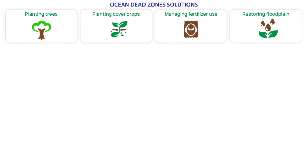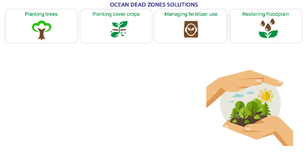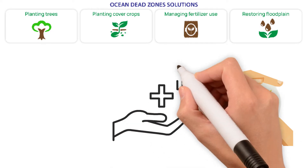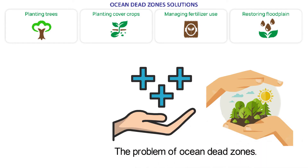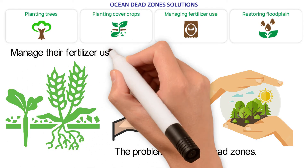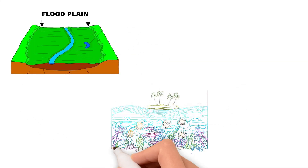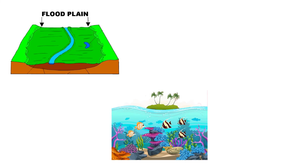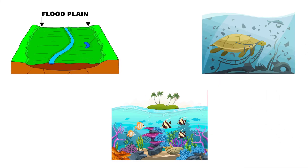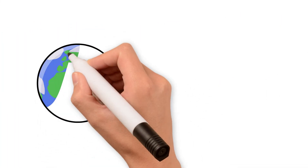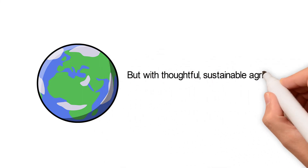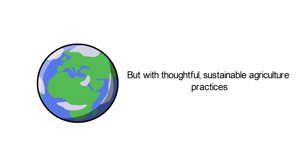Ocean dead zone solutions. Section 404 of the Environmental Protection Agency's Clean Water Act addresses the problem of water pollution in the United States. This law helps us make progress in solving the problem of ocean dead zones. It's also important to work with farmers. Scientists can educate farmers to plant cover crops and manage their fertilizer use better. Another important practice is managing floodplains around the Mississippi River. A floodplain is a flat area around a river that protects against flooding and provides a habitat for marine life. Floodplains can also stop runoff before it gets to the ocean. Ocean dead zones are a growing problem in the Gulf of Mexico and all over the world, but with thoughtful, sustainable agricultural practices, we can bring life back to these areas of our oceans once again.